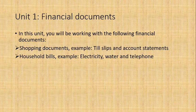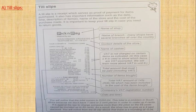Let's start with till slips. Guys, a till slip looks like this - most of you know it. A till slip is a receipt which serves as proof of payment for items purchased. You get this the moment you buy the items and pay for them. If you walk out the door and someone asks if you paid for your products, you can show them your till slip. The till slip also has a lot of information on it, like the date and the time where you bought the items.